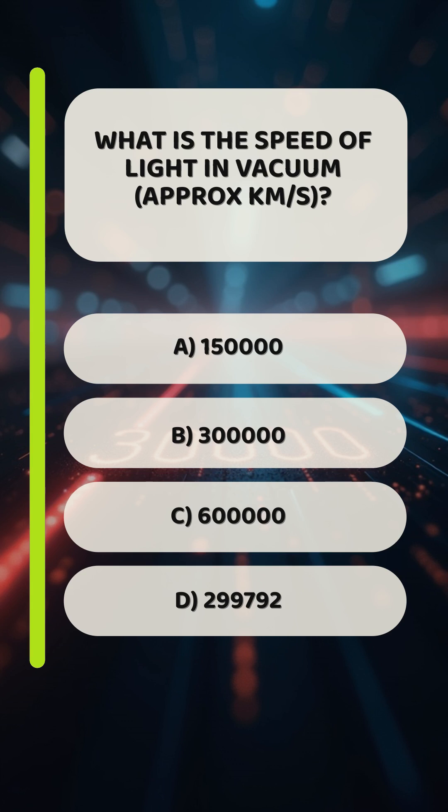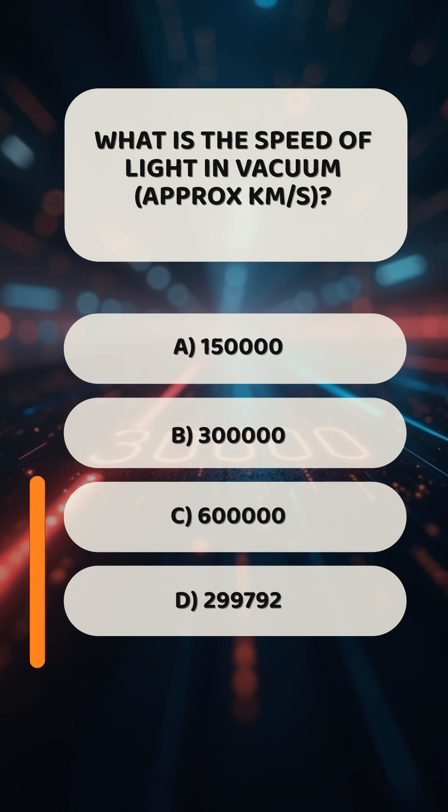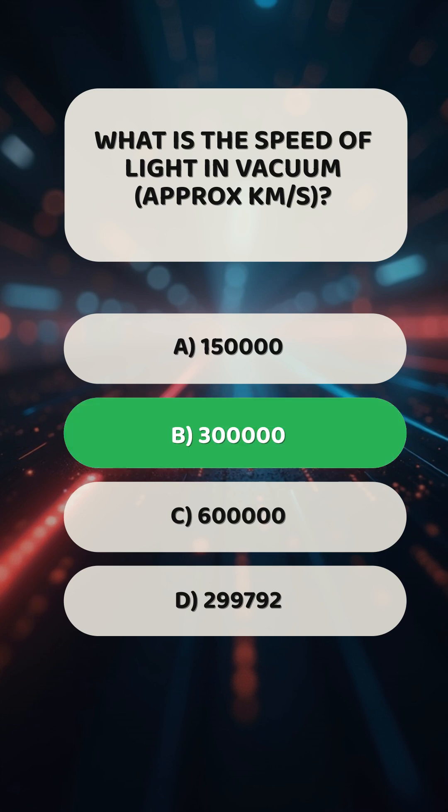What is the speed of light in a vacuum? Approximately 300,000 km/s. B. 300,000 km/s.